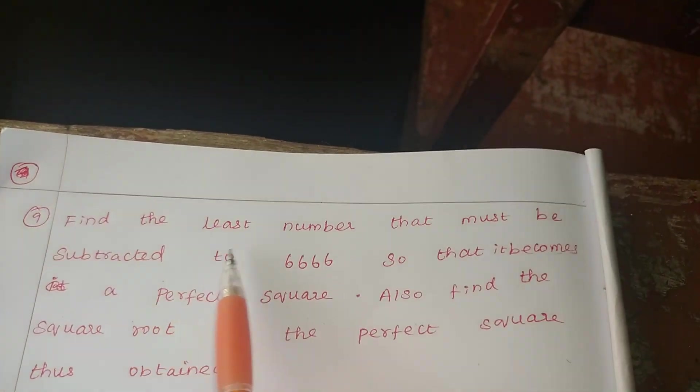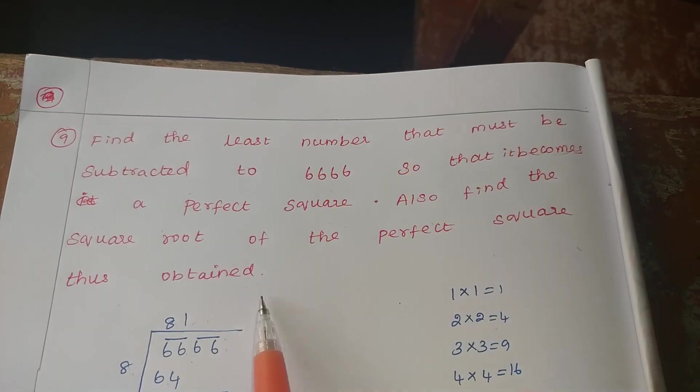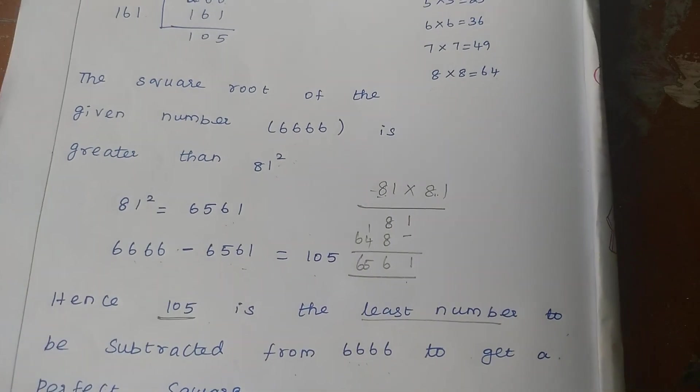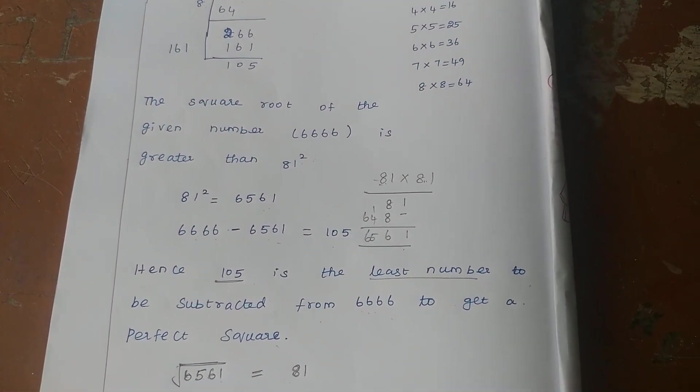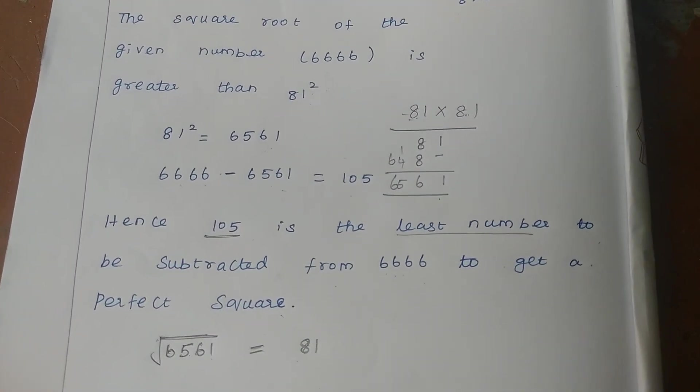So we got the answer. Least number is 105. The perfect square is what? 81. Clear? Thank you.